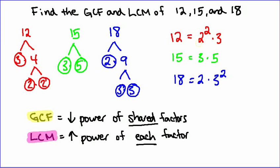First I'm going to look for shared factors in all three numbers. The number 2 is a factor of 12 and 18, but not of 15, so 2 is not a shared factor and doesn't make up part of the GCF. The number 3, on the other hand, appears as a factor of 12, 15, and 18 — so it's a shared factor. The lowest power of 3 is 3 to the power of 1. So the GCF is equal to 3.